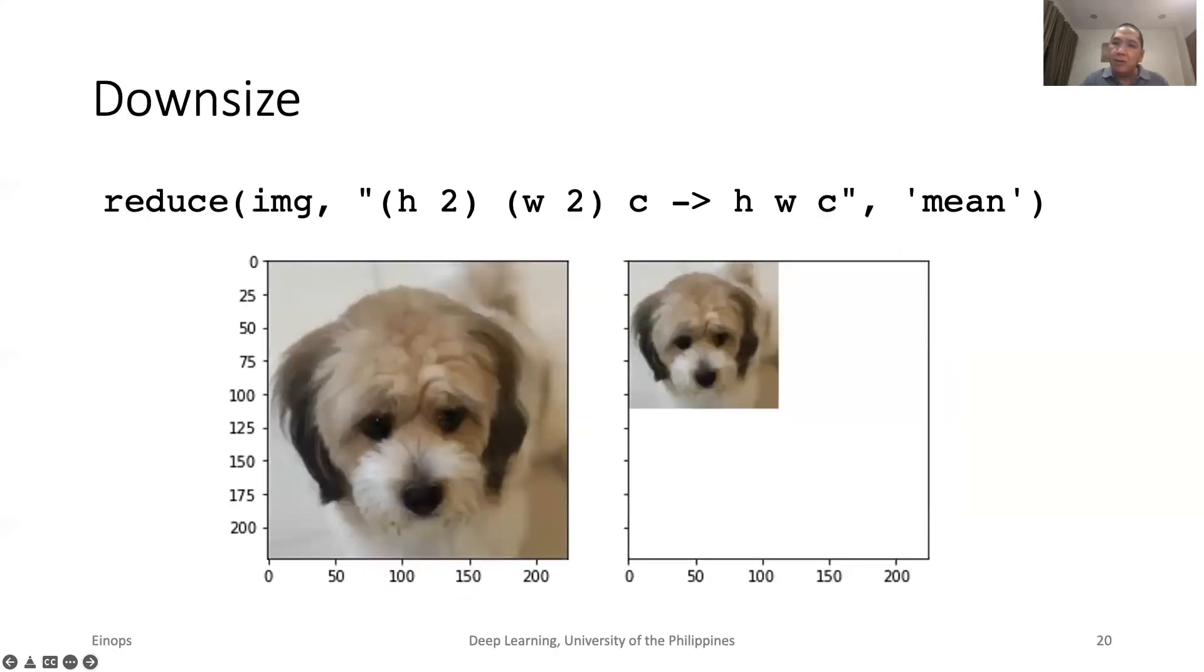In numpy, reducing the size of an image is not straightforward. In EinOps, this can be done easily using reduce. In this case, we scale down the image by 2.